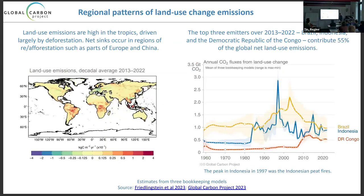Looking at the land use fluxes geographically, the northern hemisphere tends to have the regrowth side — deforestation largely happened a century ago, and in the last 50 years we've seen reforestation, improved forest management, and increasing uptake in temperate forests. In contrast, the red emissions are in the tropical regions — deforestation in Brazil, the Democratic Republic of Congo, and Indonesia in particular.